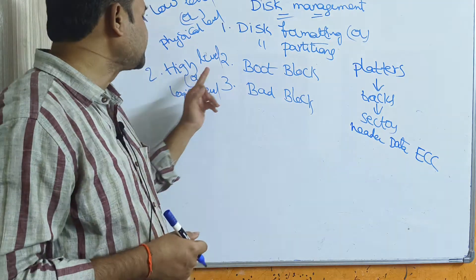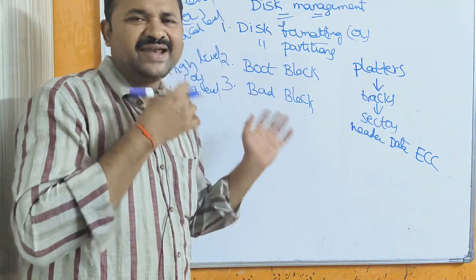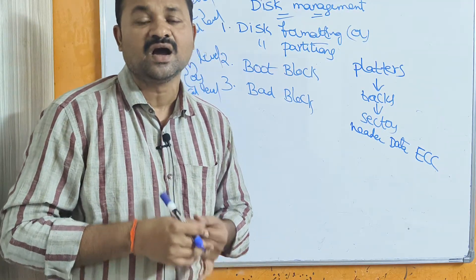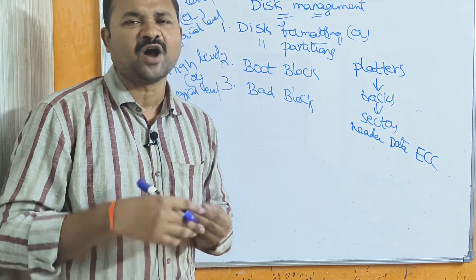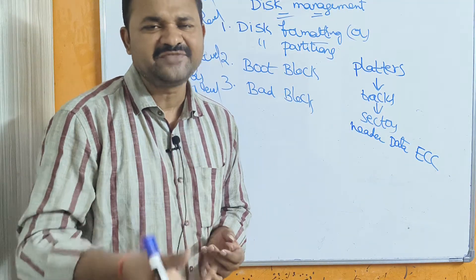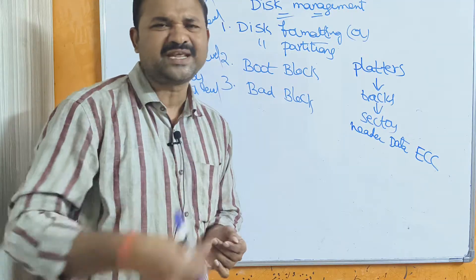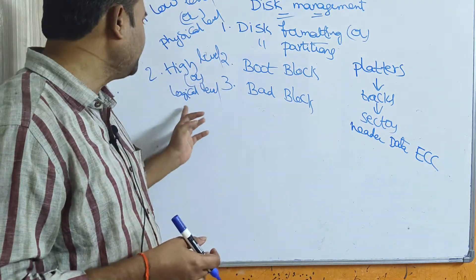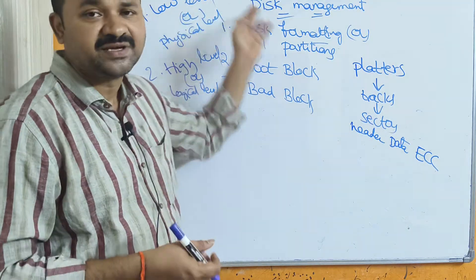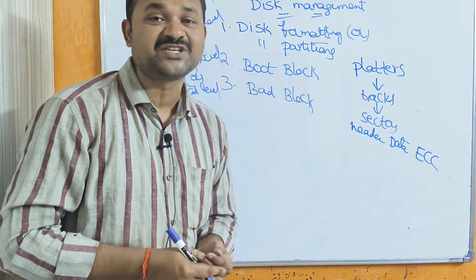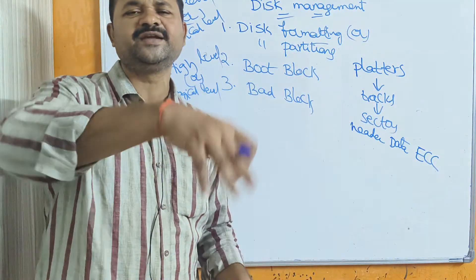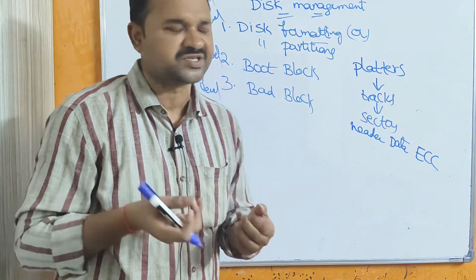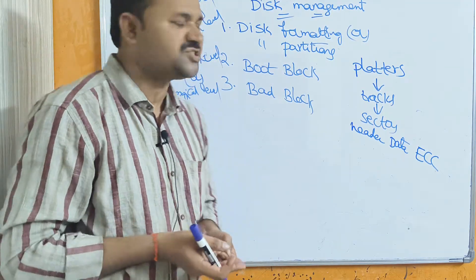The second type is high-level or logical-level partitioning. High-level partitioning is done by the user while installing the operating system. In Windows, the operating system mainly has three file systems: C drive, D drive, and E drive. Those partitions are created at operating system installation time. Low-level partitioning is done at system manufacturing time, while high-level partitioning is done by users.